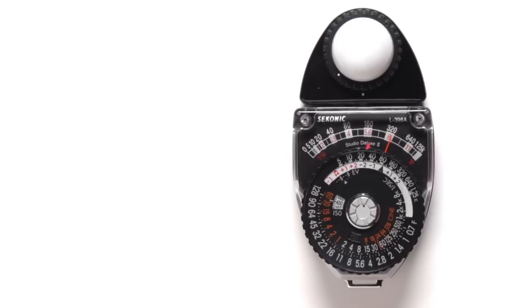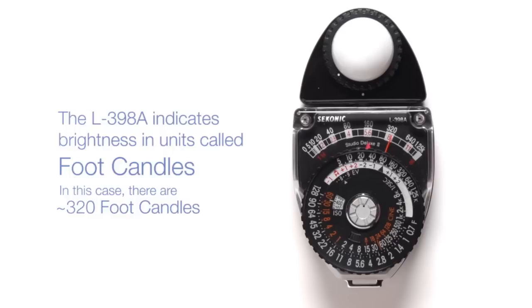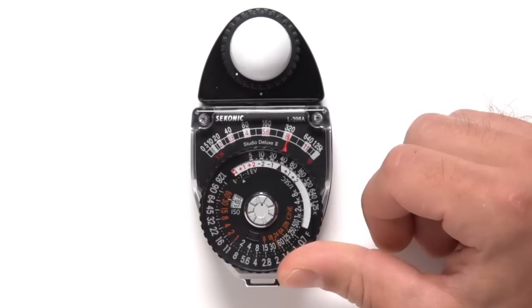The L398A indicates brightness in units called foot candles. Now grasp the outside of the dial and turn it so that the red pointer lines up with the meter needle.